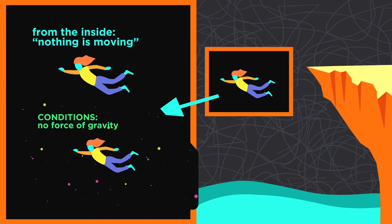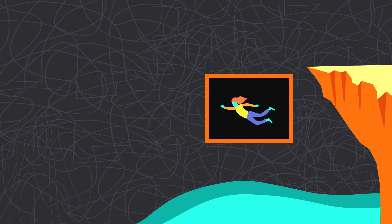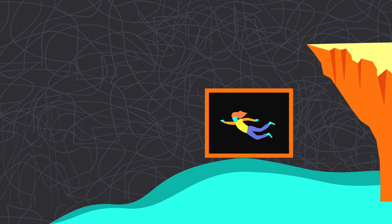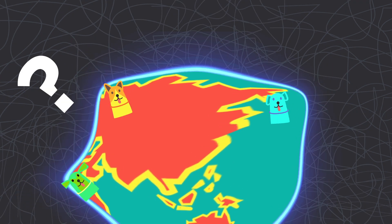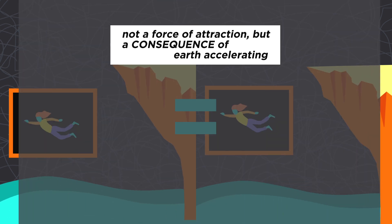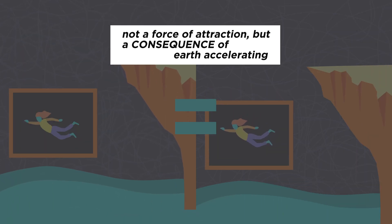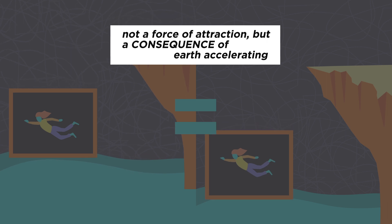So going back to the cliff — with the exact same scene, there shouldn't be any force of gravity on the system. When we look outside where we can see the whole thing, really the earth is the one accelerating. What does that even mean? The earth is accelerating upwards. It's just another frame of reference for the same thing. It just means that a force of attraction isn't what makes us fall towards earth. No such force exists.